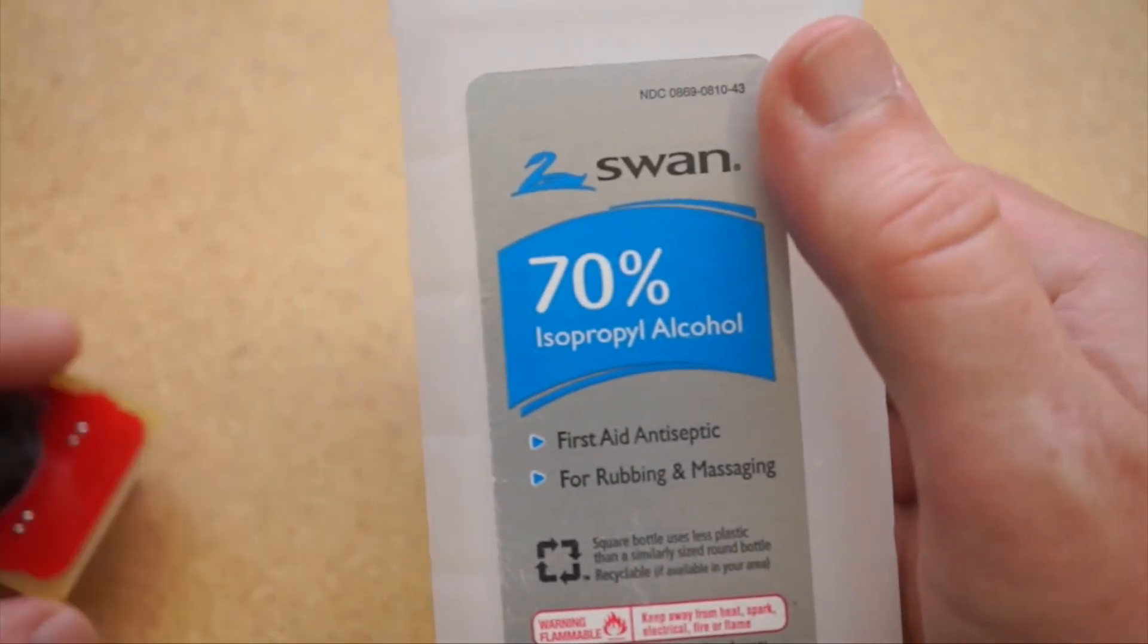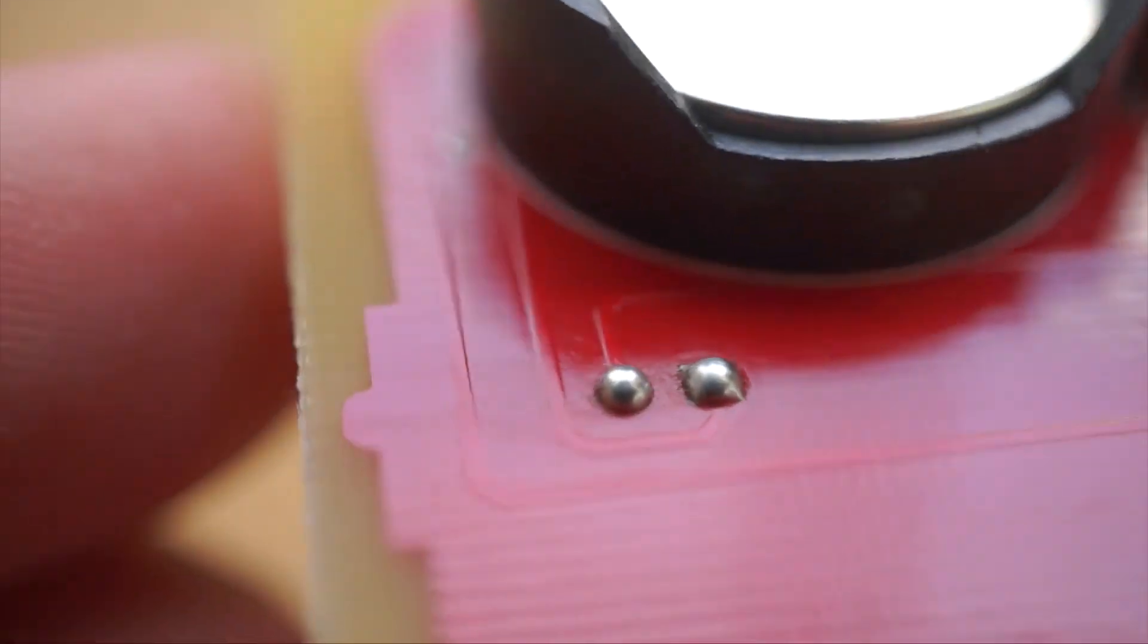You can clean up the extra flux with a swab of isopropyl alcohol and you've got a board worth showing off.